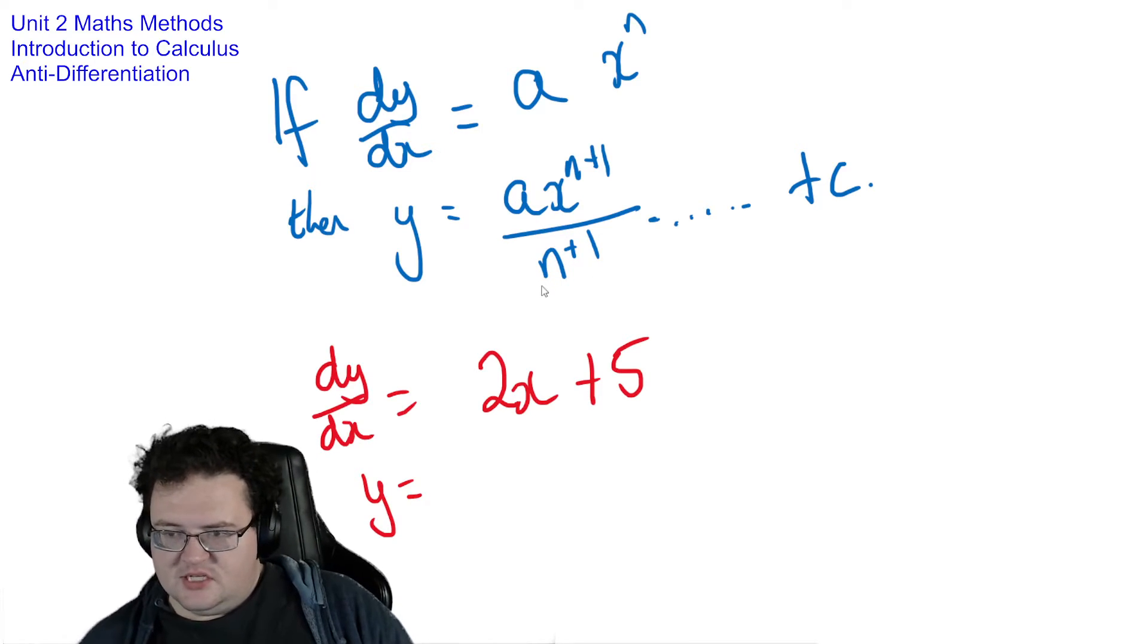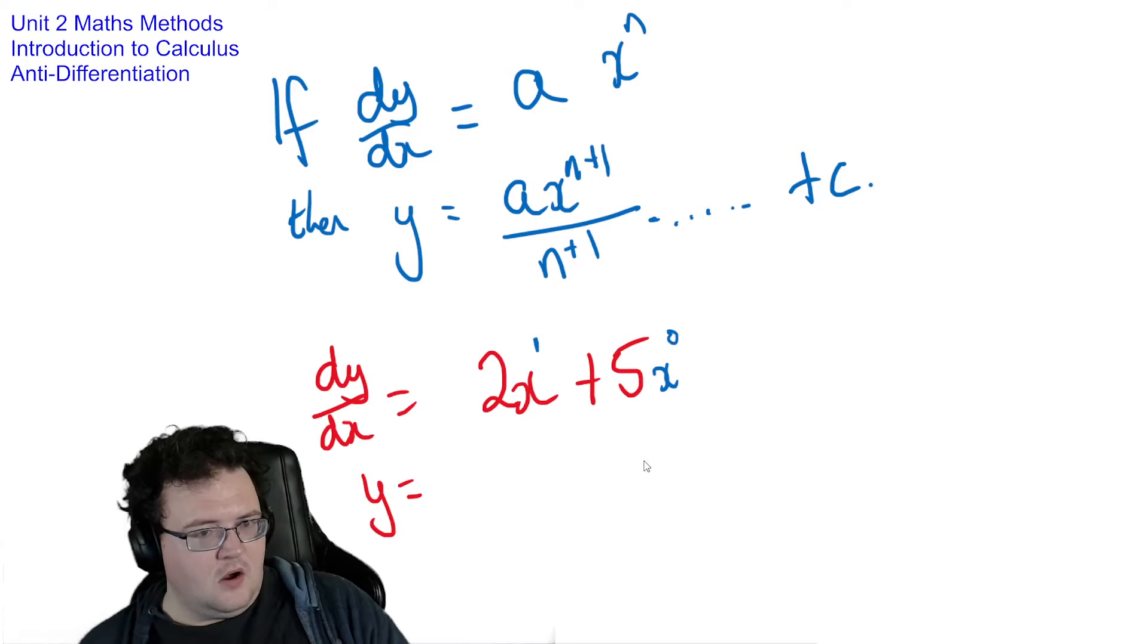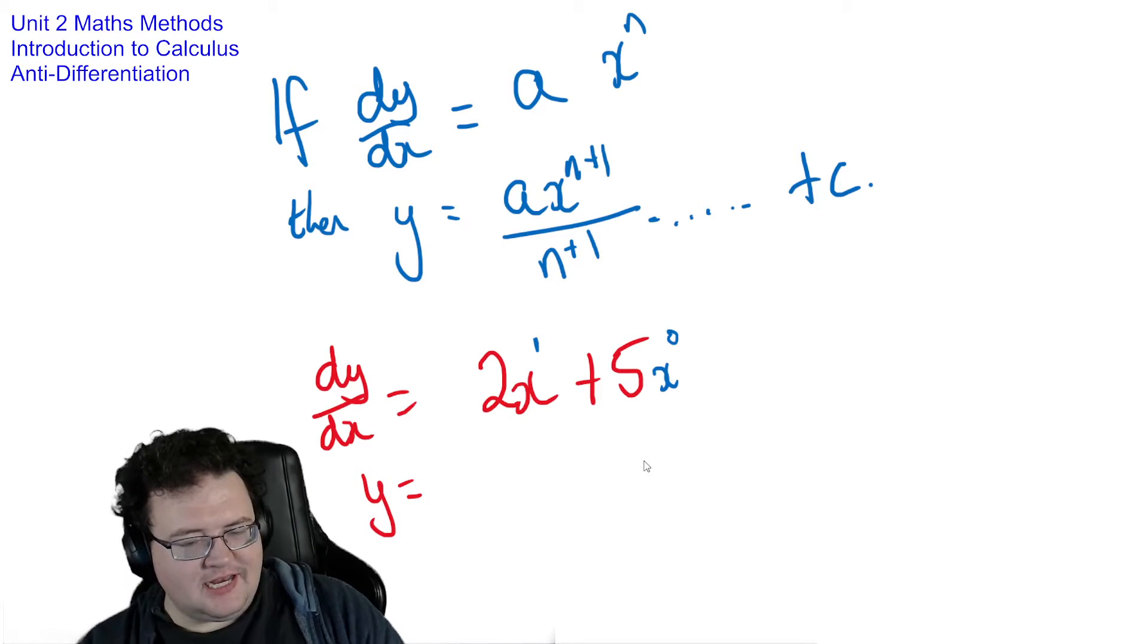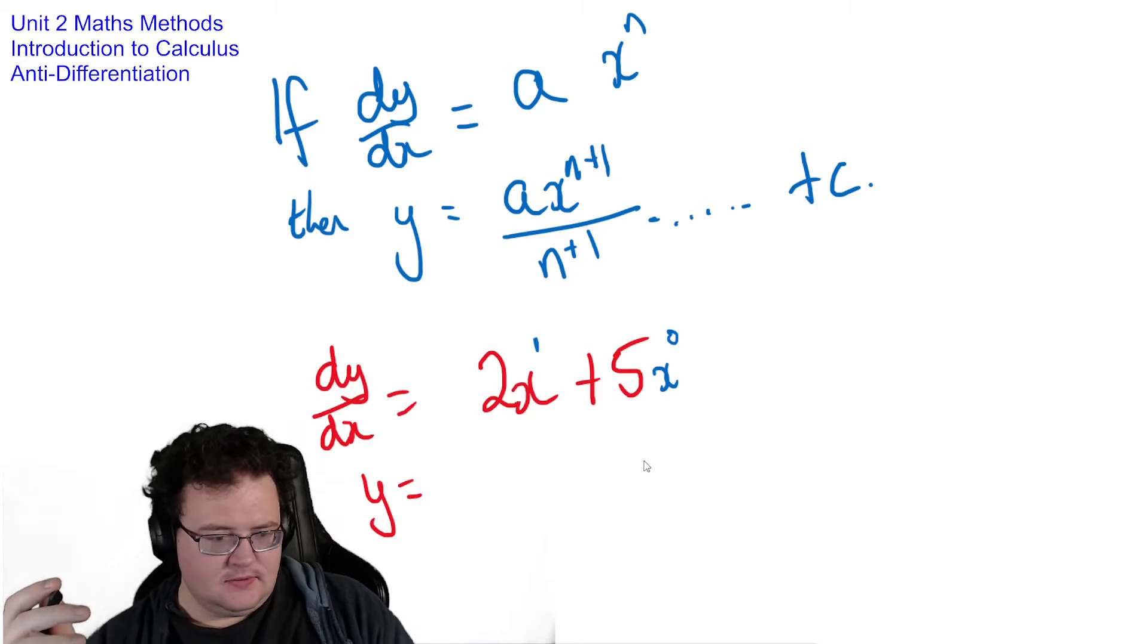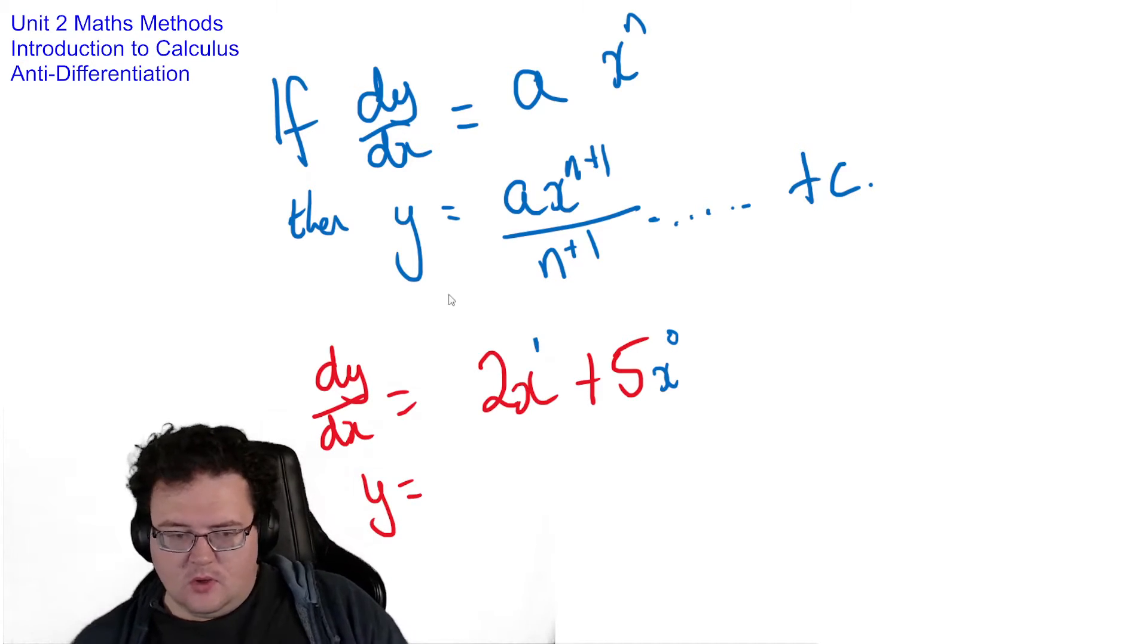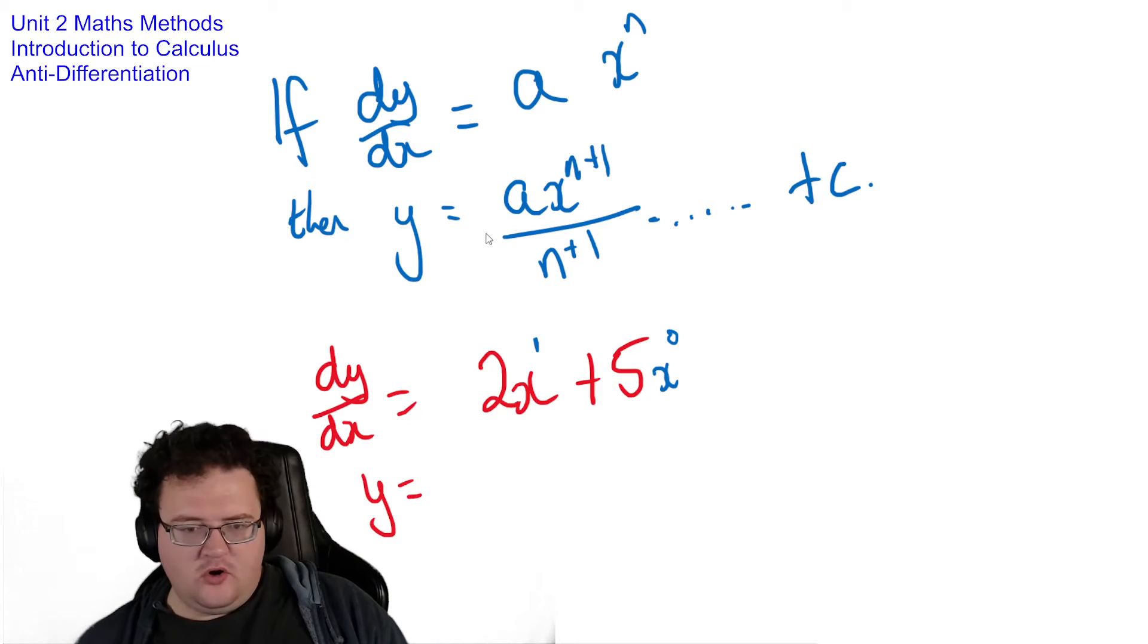Alright, so in this case here, what power have I got here? Well, that's 1. What power do I have here? Well, that's x to the 0. Alright, a constant in a differentiated equation gains an x. And Dylan, you are not correct. You forgot something very, very important.